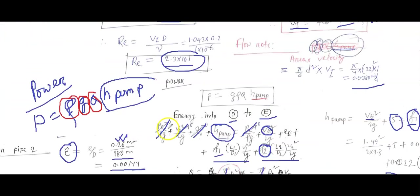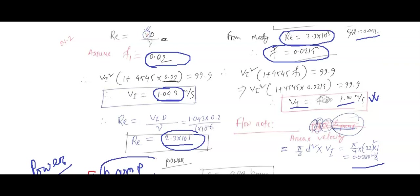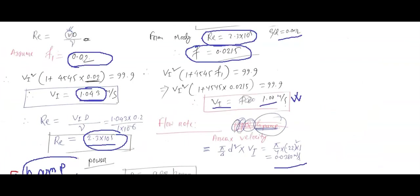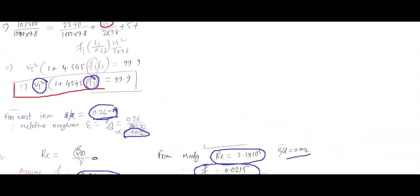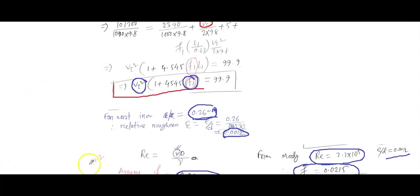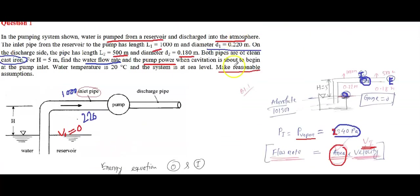One important reminder: for any problem in this chapter, when you apply the energy equation involving a pump to another surface, use absolute pressure. But if you are considering two free surfaces, use gauge pressure (set to zero). That's the key distinction.